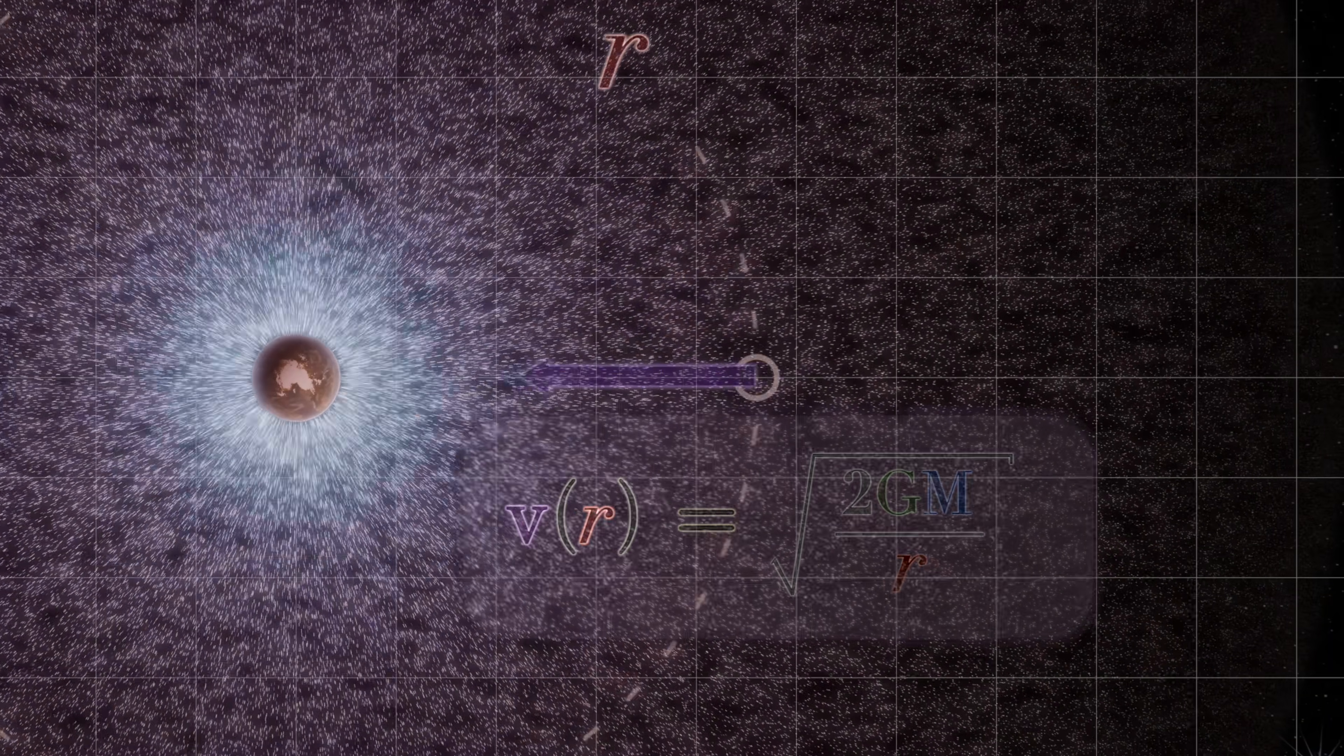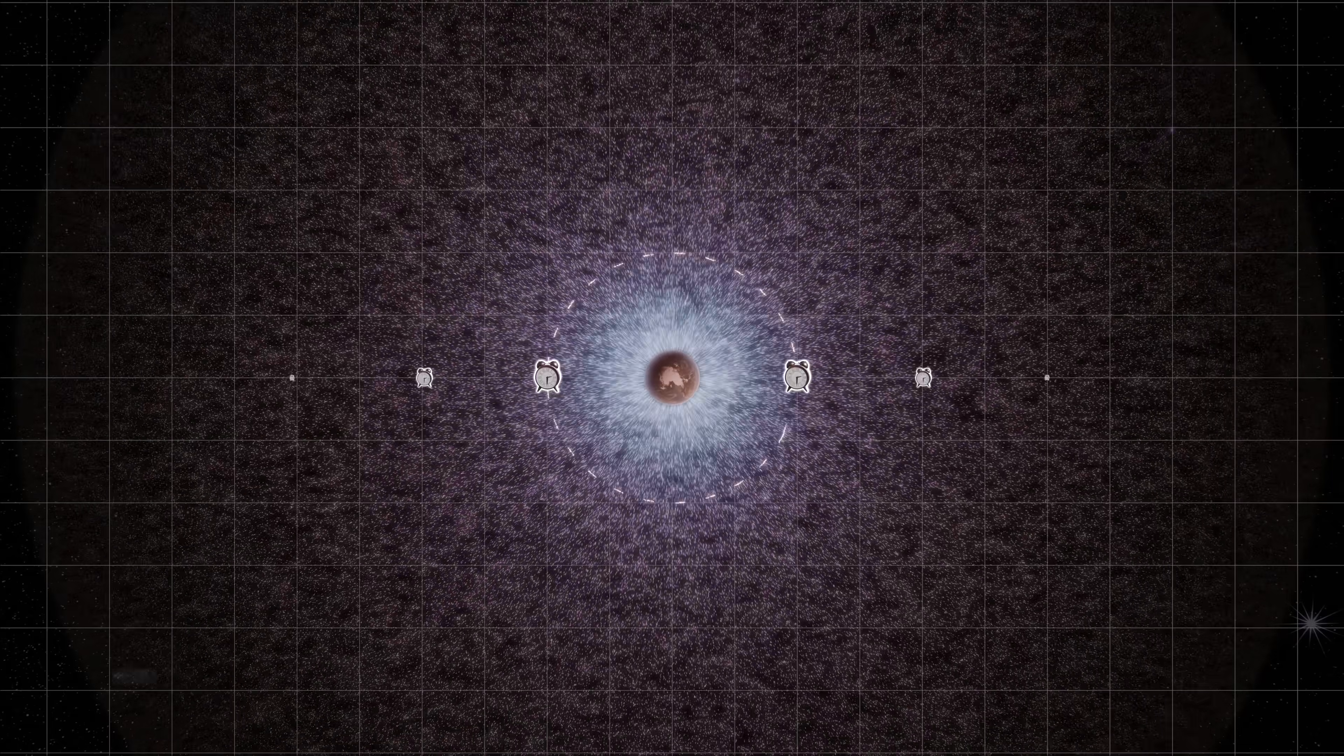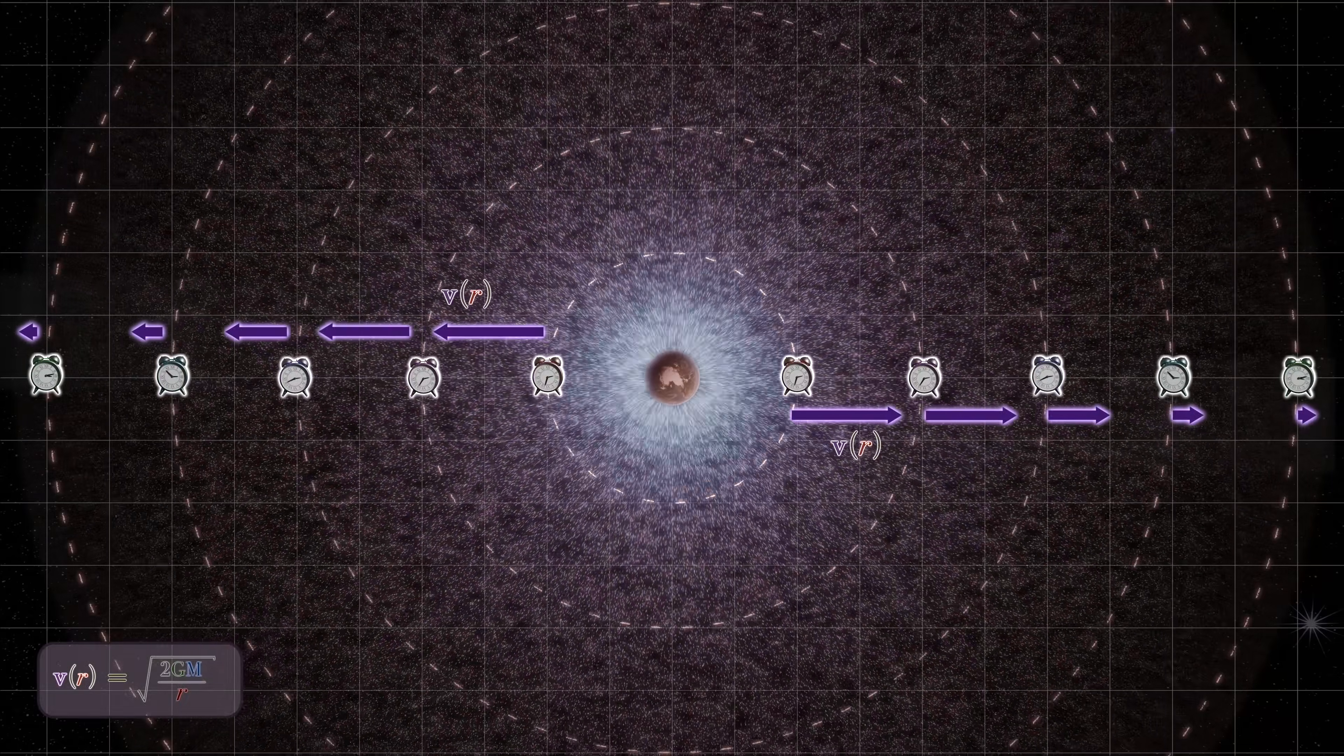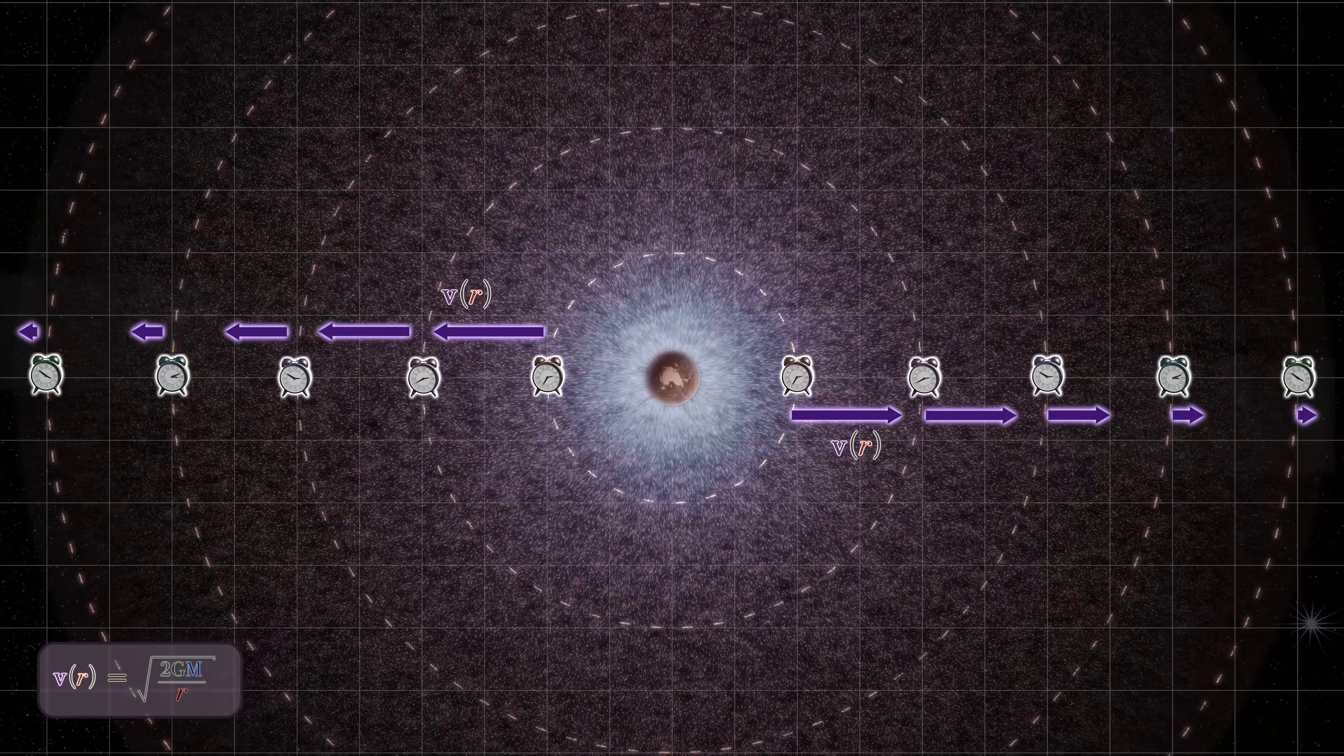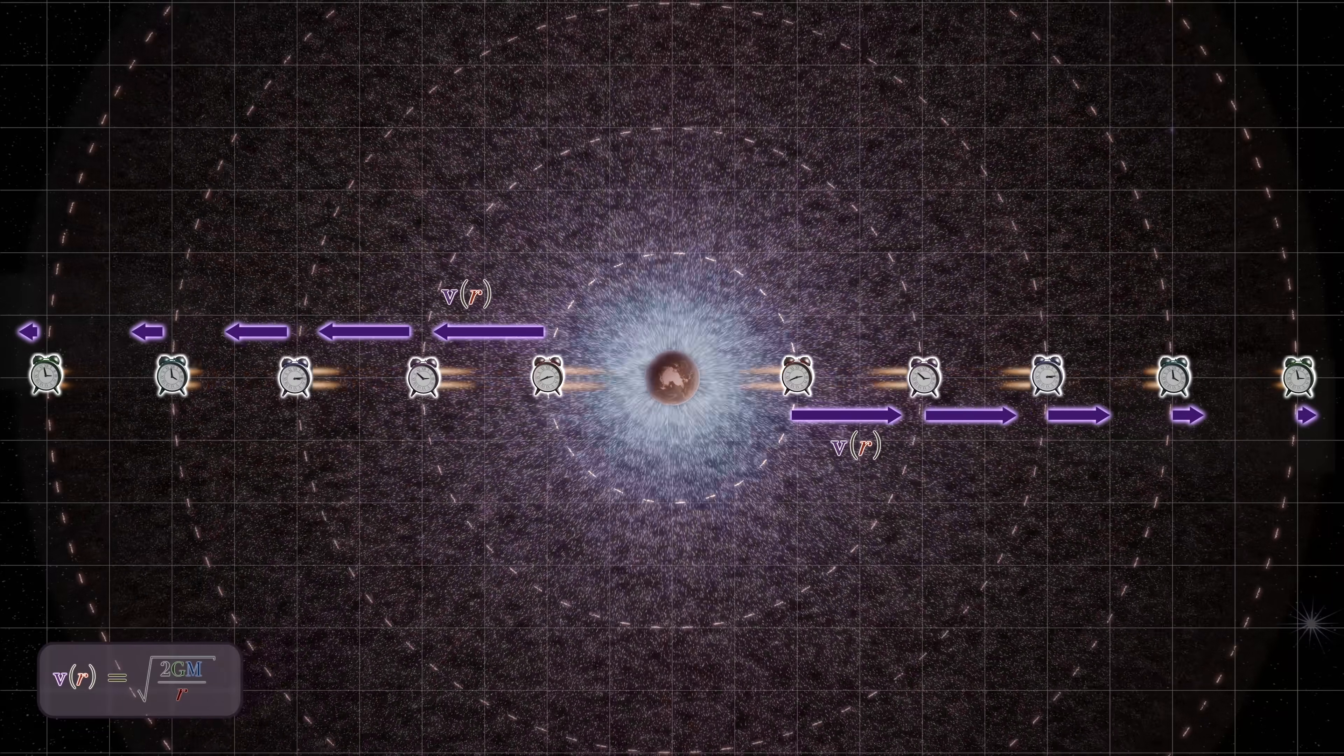So, if we want to extend our hypothesis that relativistic time dilation and gravitational time dilation are one and the same thing, then we can do so by asserting that our clocks have a velocity v with respect to this particular flow field, a velocity which they maintain via their constant outward acceleration with respect to the mass.